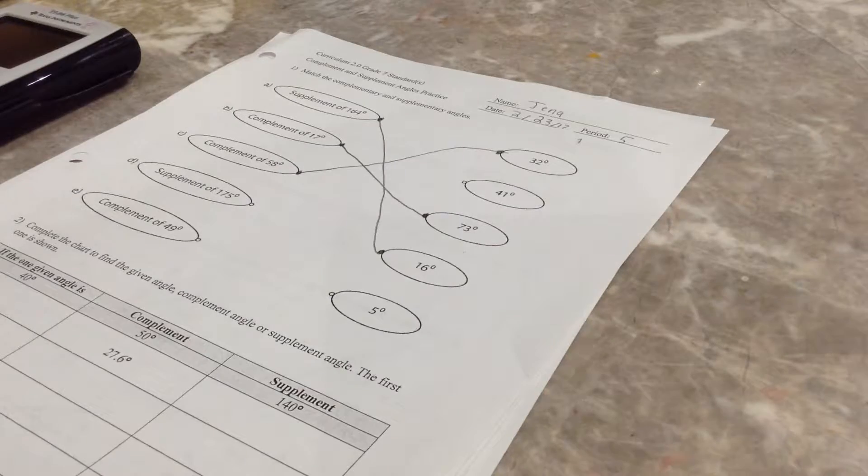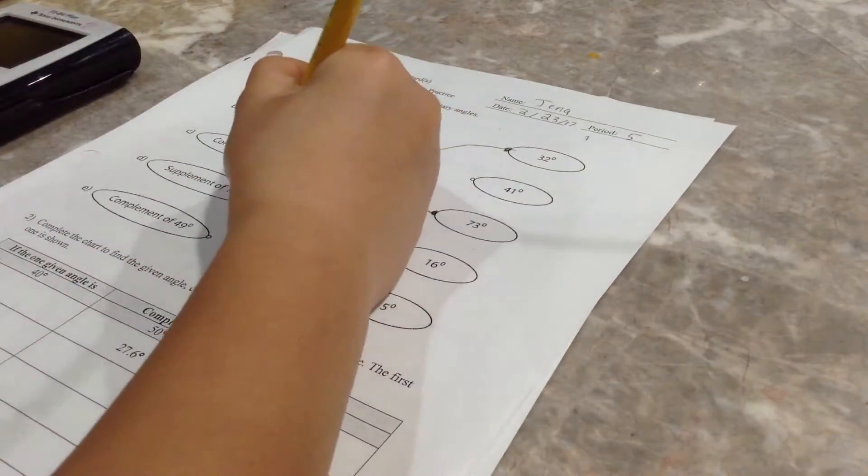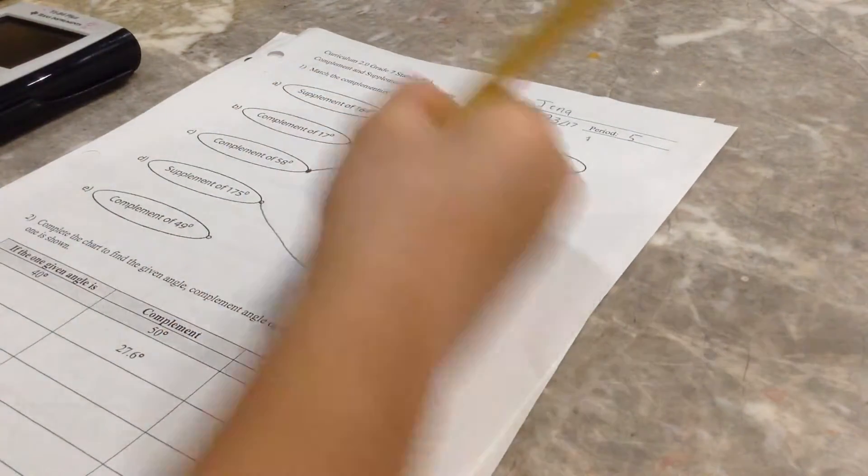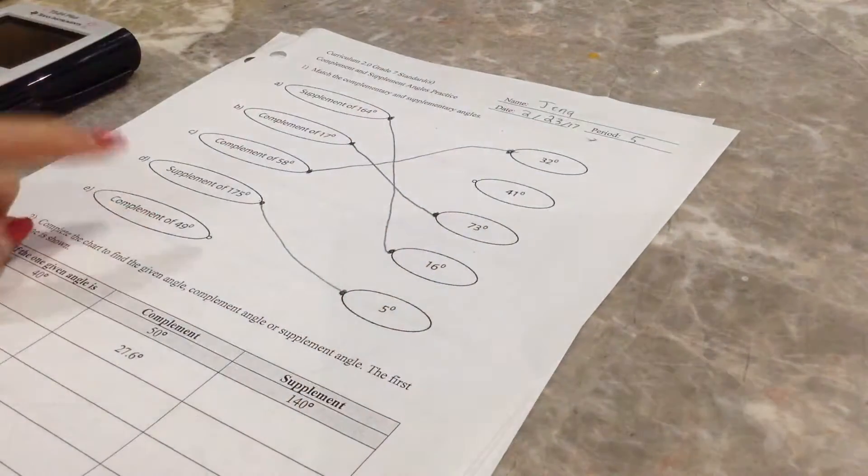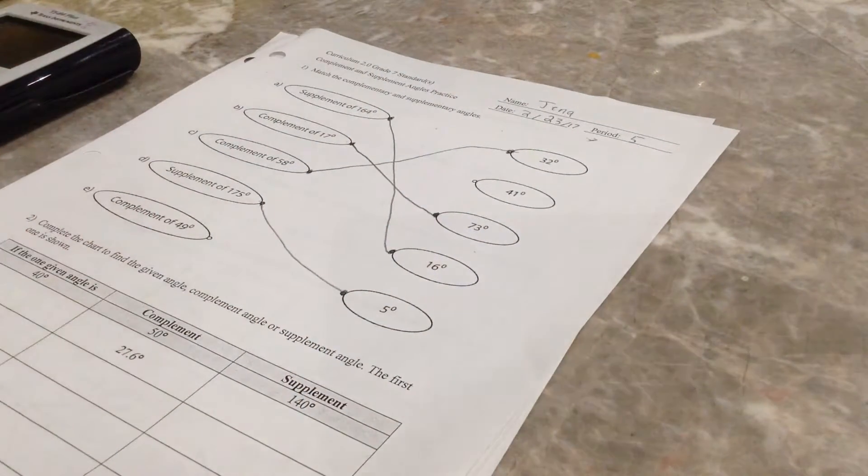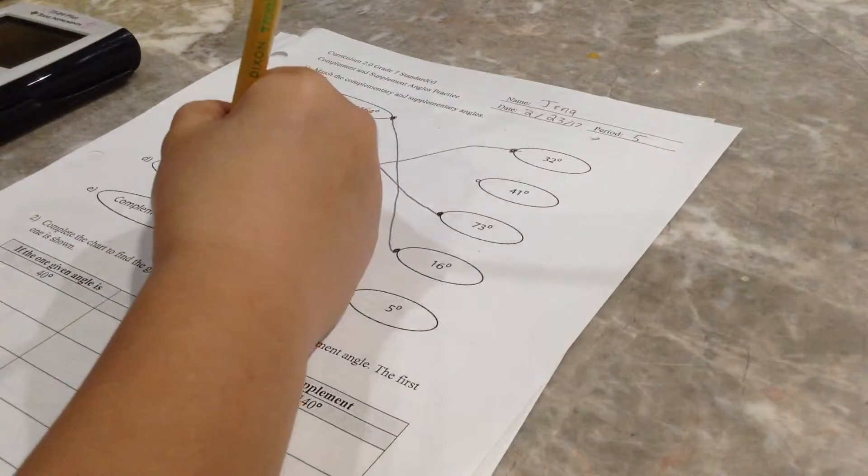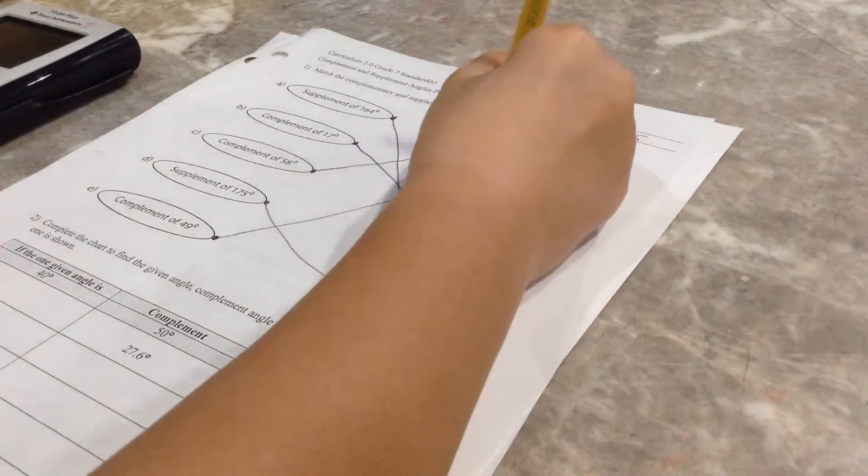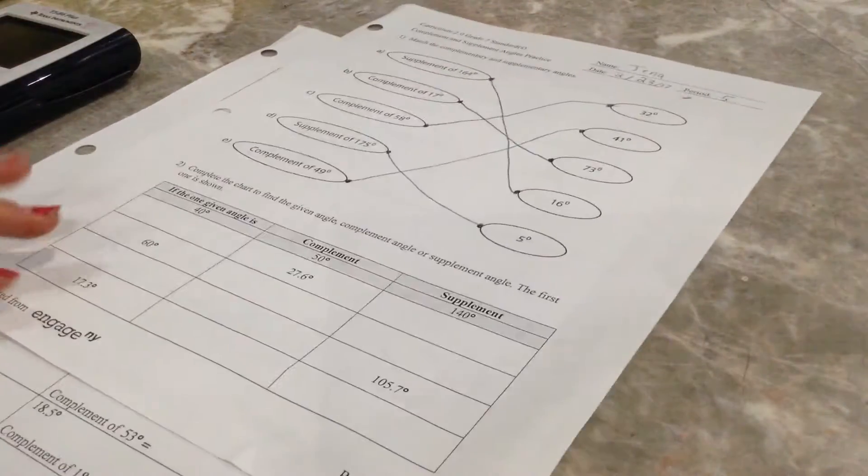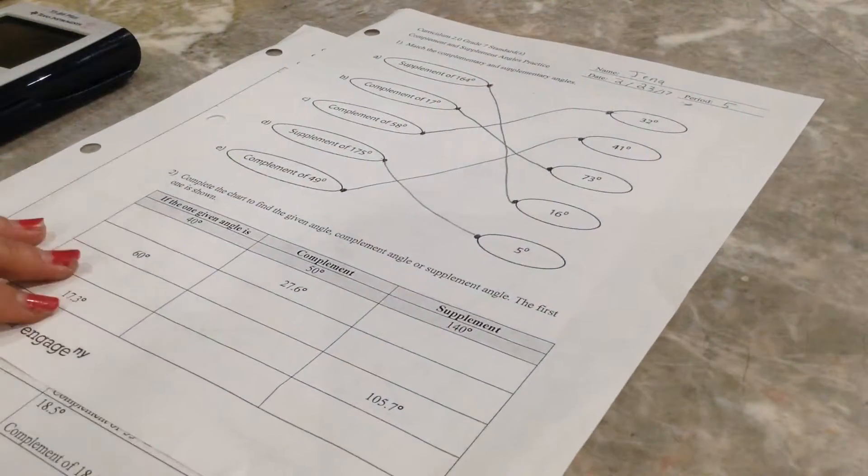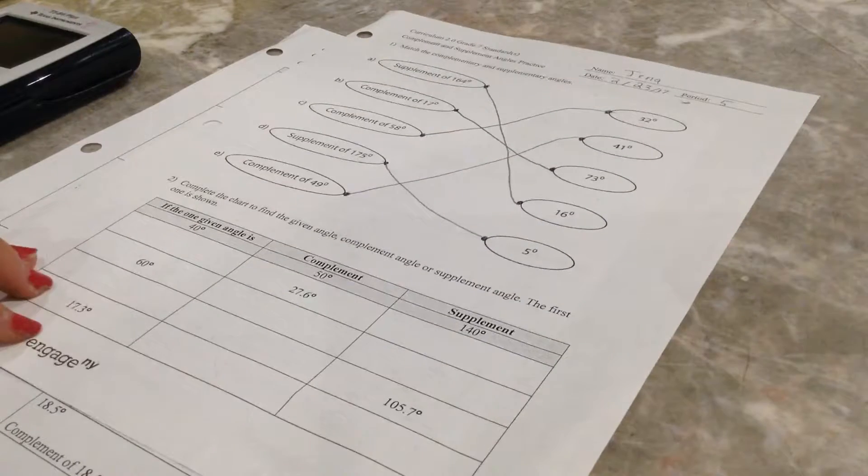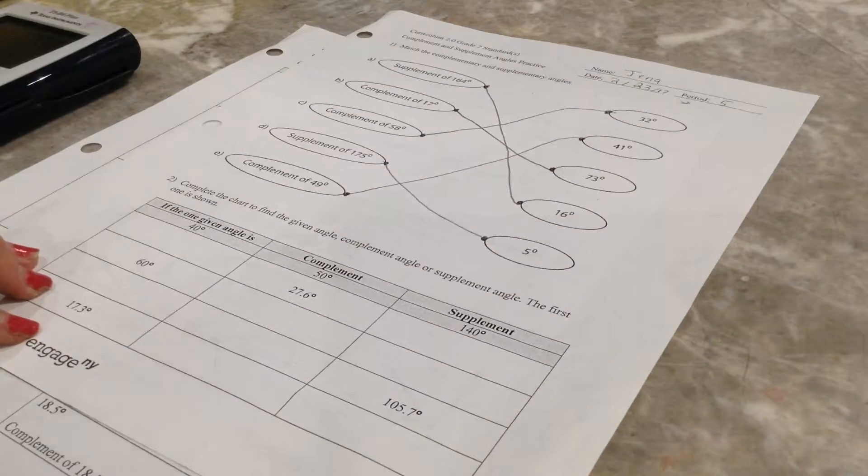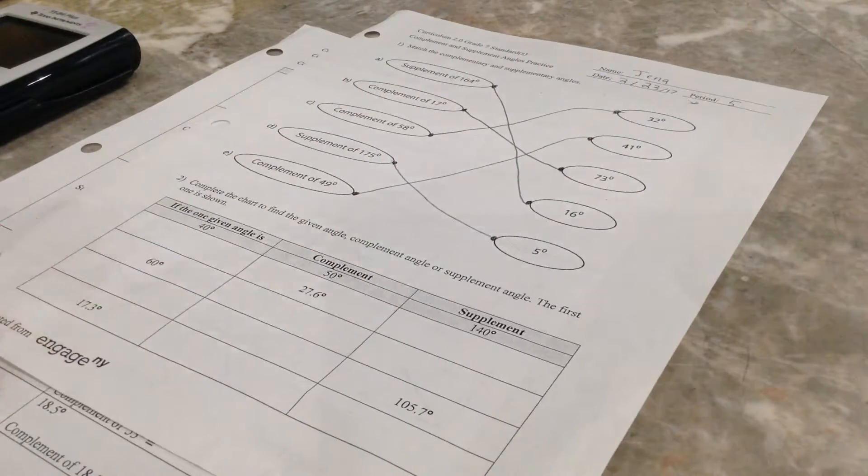So, let's see, that's 5. Oh, I wonder where this one goes. I have no idea. Okay, so, the next one is complete the chart to find the given angle. Complement angle or supplement angle, the first one is shown. So, let's start.